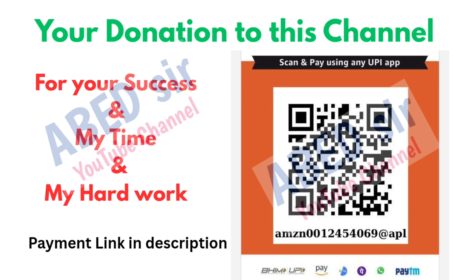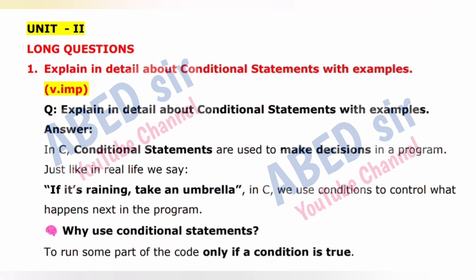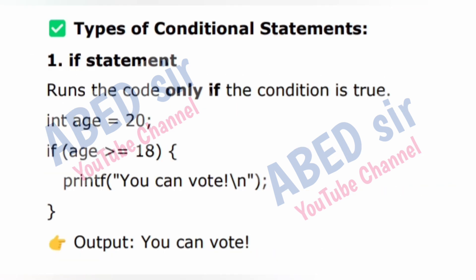First important long question: Explain in detail about conditional statements with examples. In C, conditional statements are used to make decisions in a program. Just like in real life we say 'if it's raining, take an umbrella,' in C we use conditions to control what happens next. Why use conditional statements? To run some part of the code only if a condition is true. Types: 1. If statement — runs the code only if the condition is true.